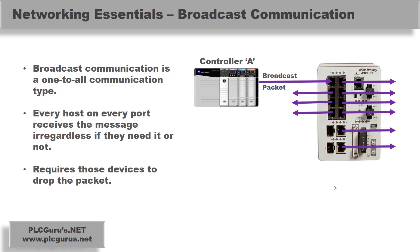The last communication type is broadcast. Controller A sends out a broadcast packet into switch port 1. The switch — even if managed — recognizes it as a broadcast packet and sends that data out every single switch port. If uplink ports are connected to other switches, they receive it and do the same, and so on. Broadcast communication, if left unchecked, can quickly create what's called a broadcast storm. It is a one-to-all communication type — every host on every port receives the message regardless of whether or not they need it, and any device that doesn't need it is required to drop it.